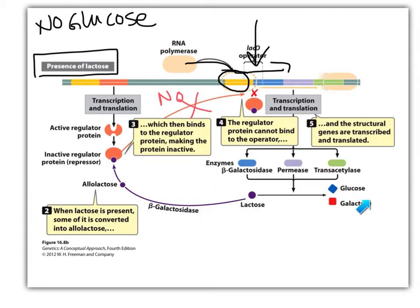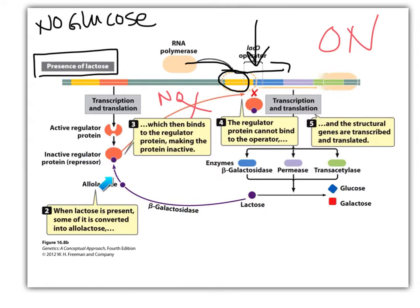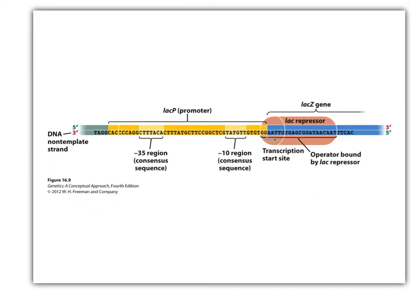When these proteins are made, lactose can be broken down into glucose and galactose. The presence of lactose is the inducer — it turns on the operon by binding to the repressor itself, blocking it from preventing RNA polymerase from carrying out transcription and translation.